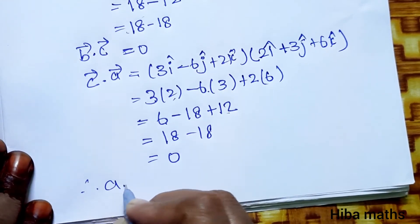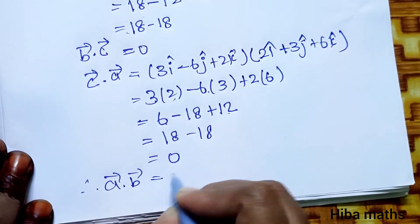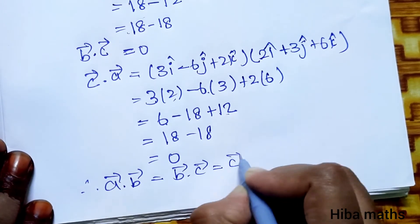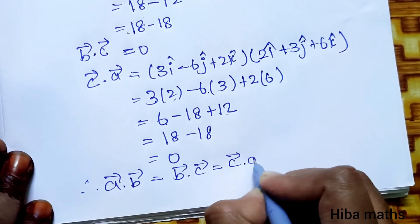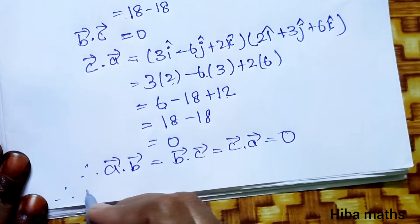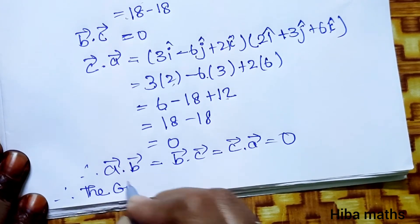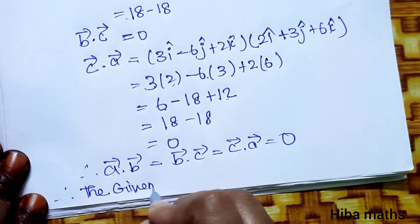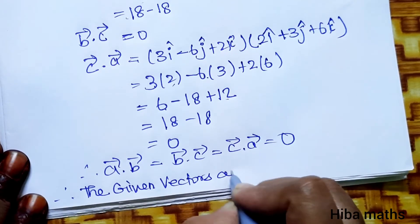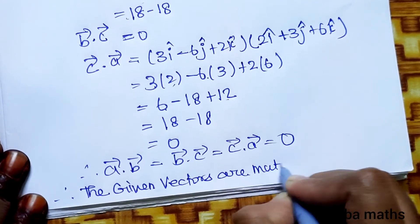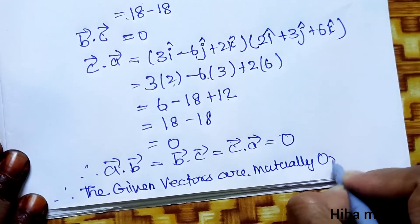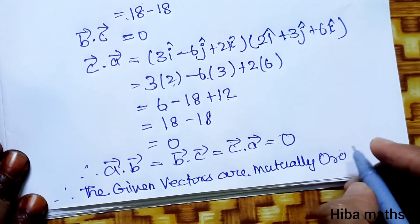Therefore, A vector dot B vector is equal to 0, B vector dot C vector is equal to 0, and C vector dot A vector is equal to 0. Therefore, the given vectors are mutually orthogonal.